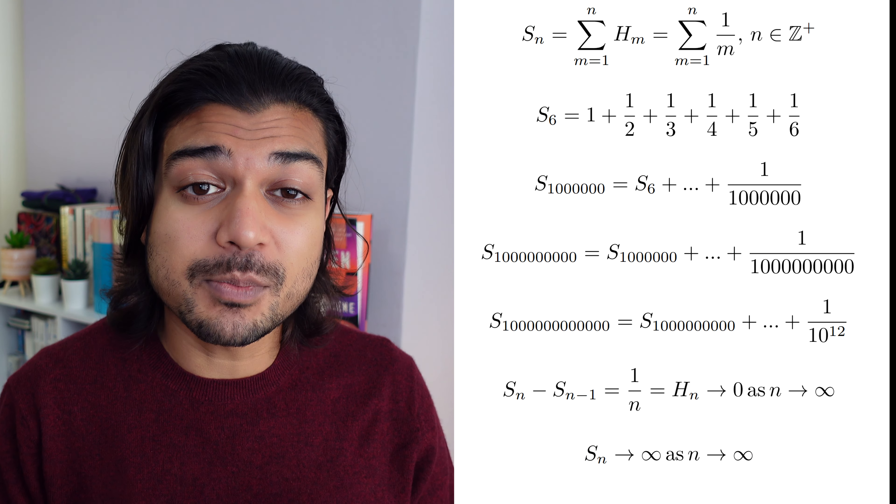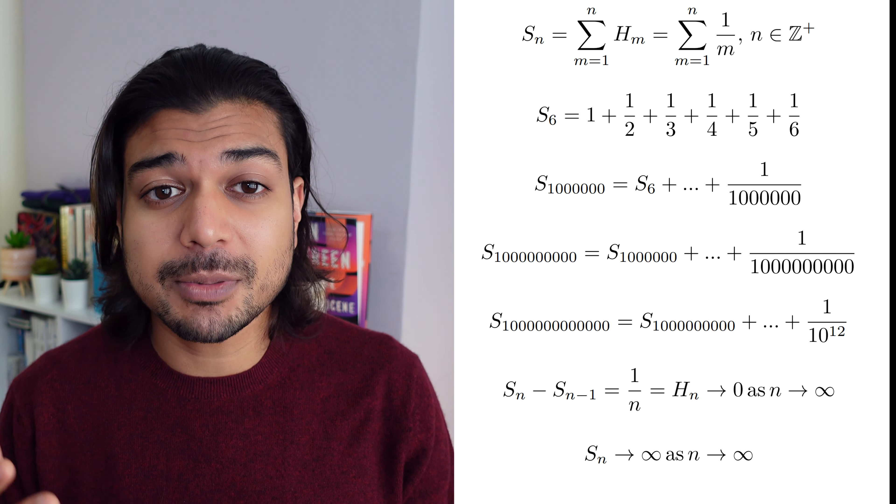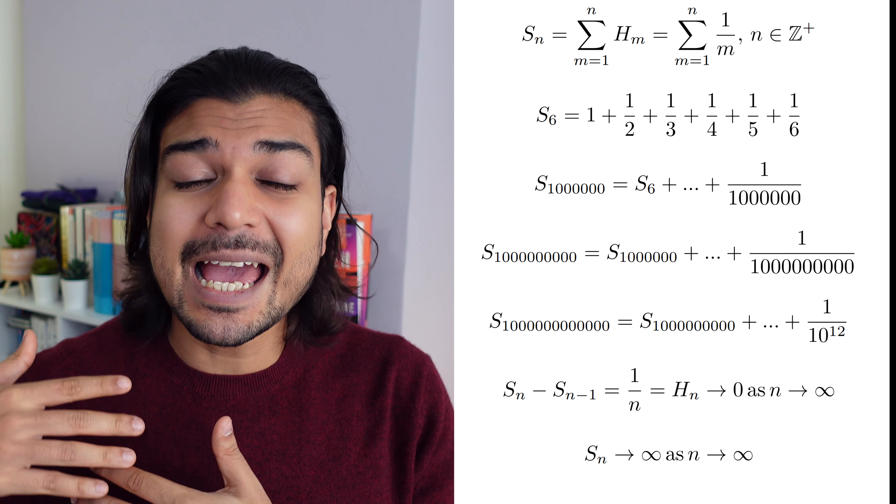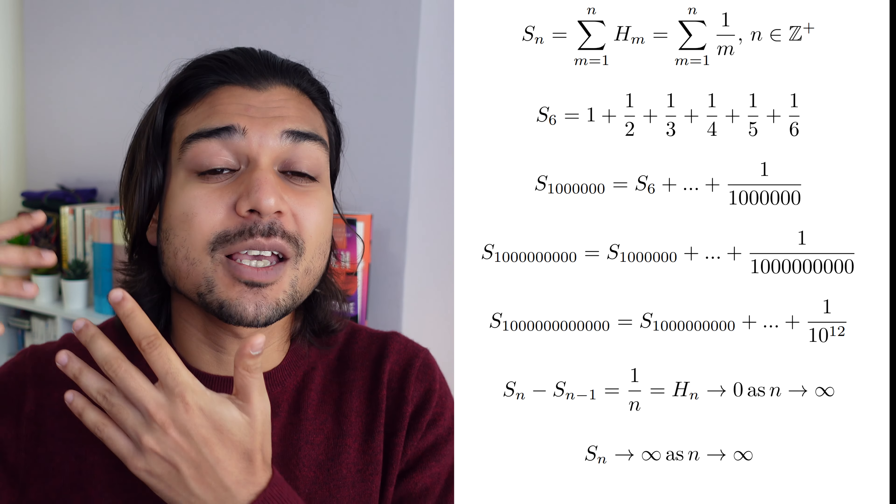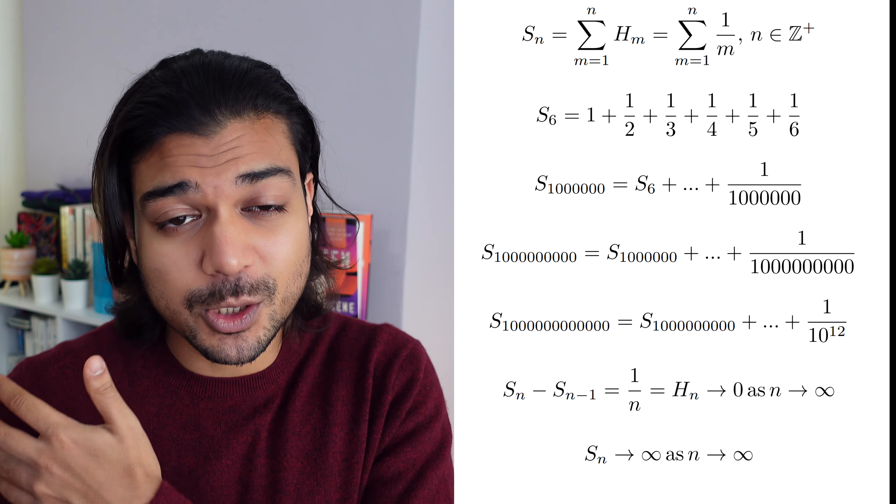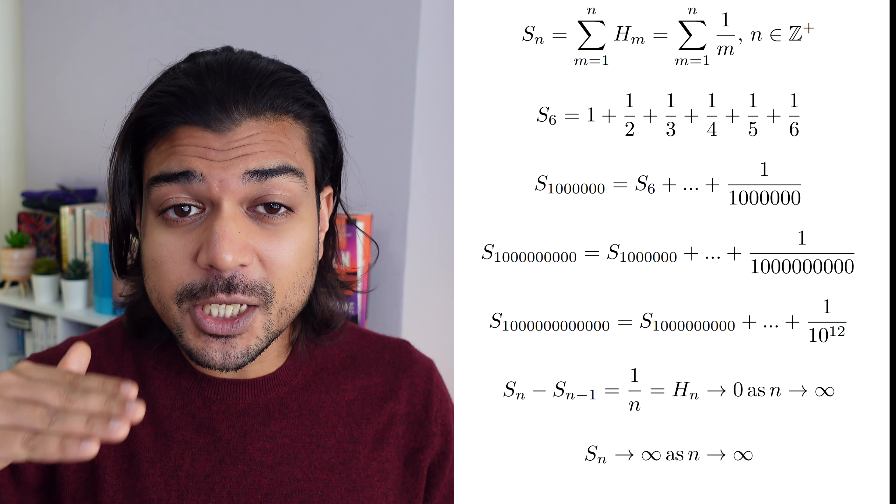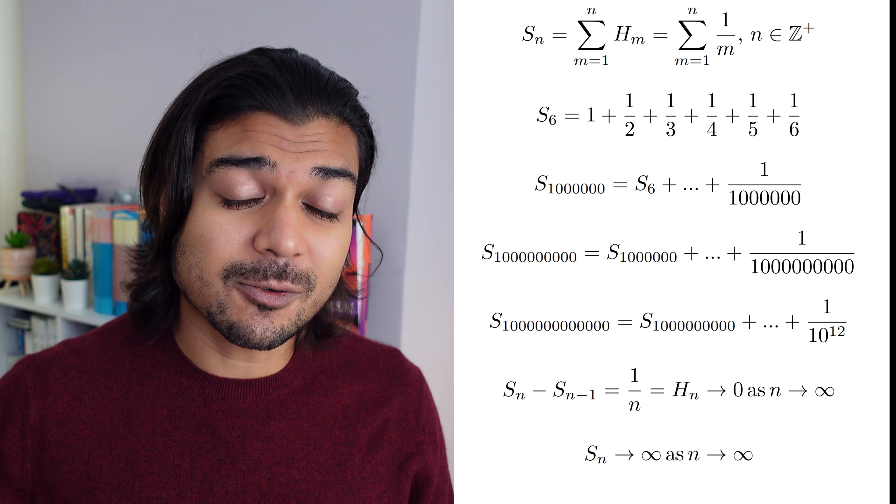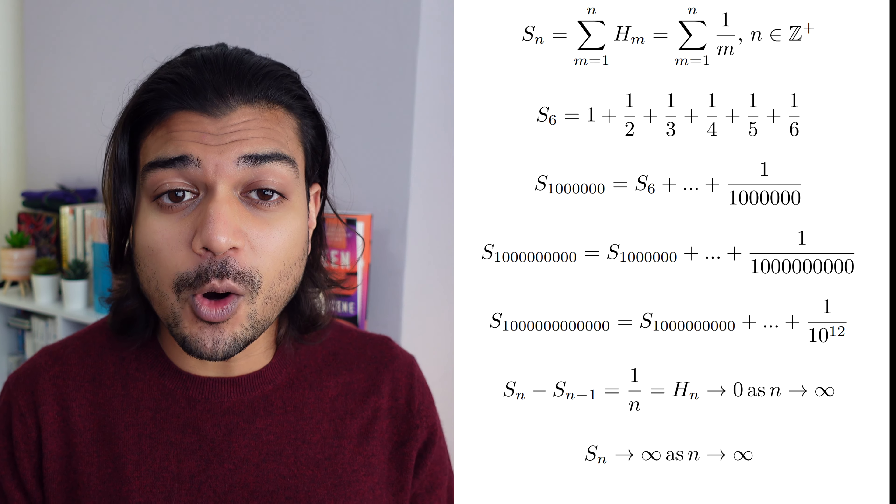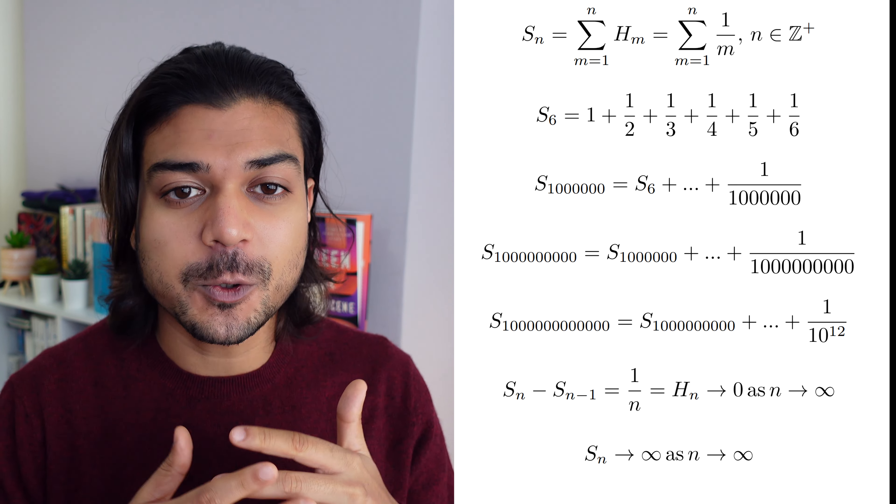However, if you take the sum—1 plus a half plus a third plus a quarter plus a fifth plus a sixth, and so on, plus 1 over a million, plus 1 over a billion, plus 1 over a trillion—even though each term is getting closer and closer to zero, the actual sum of these values diverges off to infinity.